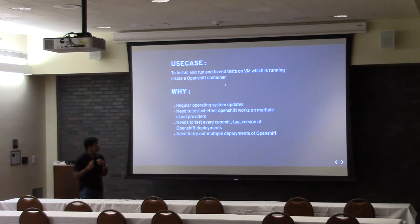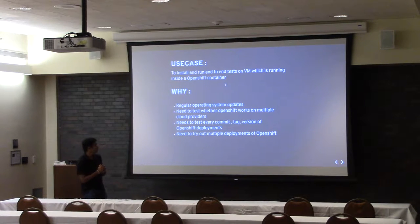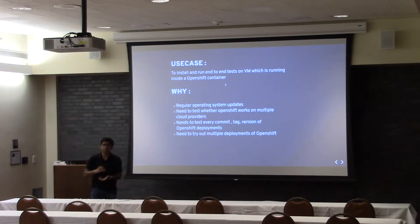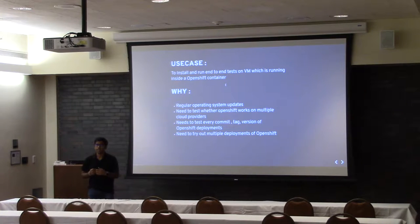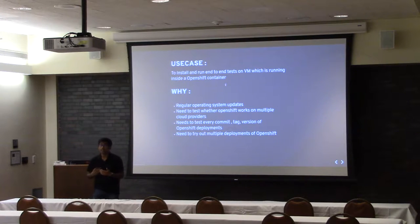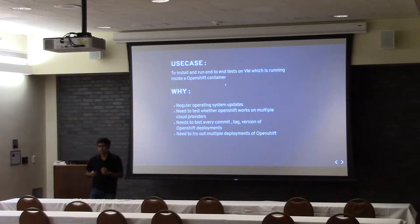Our use case is to install and run end-to-end tests of OpenShift on a VM running inside an OpenShift container. It's a nested virtualization scenario where we are running a virtual machine inside a container which is already running on an OpenShift VM. We need this because of regular system updates — there is a need to test OpenShift on multiple distros like CentOS and Fedora. Fedora is moving very fast: we have Fedora 26, 27, 28, and 29 is in beta. Whenever there is an update, we need to verify whether OpenShift works on that update.